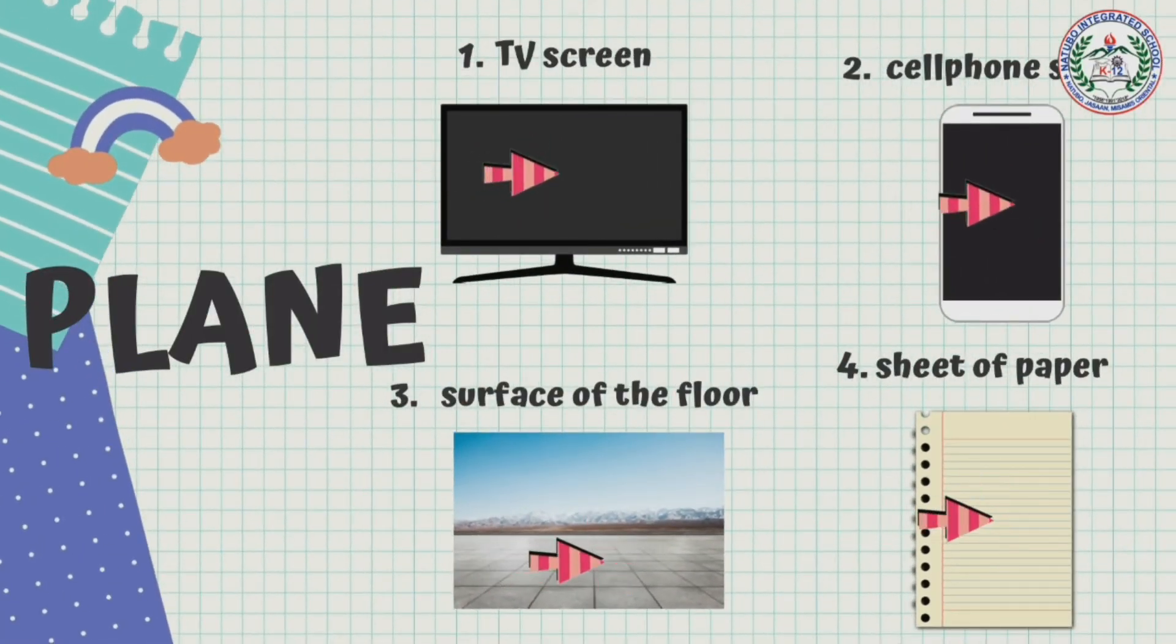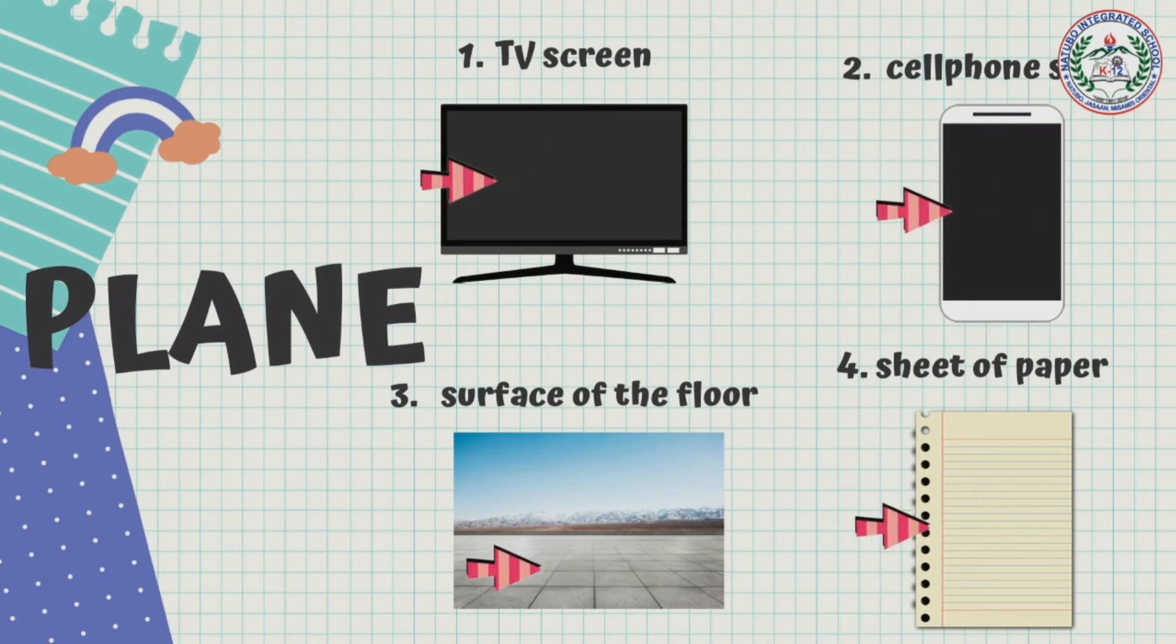So these are concrete examples of a plane. We have one, TV screen; two, cell phone screen; three, surface of the floor; and four, sheets of paper. So those are examples of a plane.